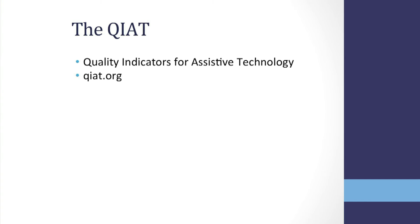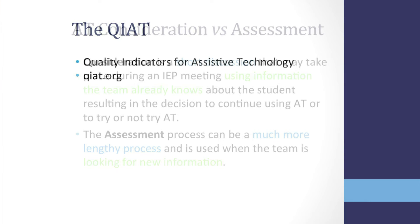We are going to reference the Quality Indicators for Assistive Technology, also known as the QIAT, as assessment is the second quality indicator that schools may focus on to determine if their students are receiving quality AT services.